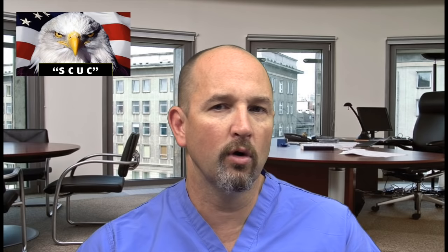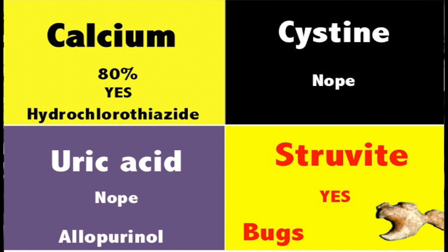"Oh say can you see" is a mnemonic for the four types of kidney stones. Say can you see: Struvite, Calcium, Uric acid, and Cysteine. There are four kidney stones.